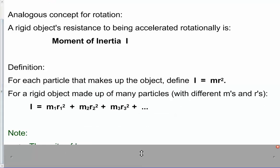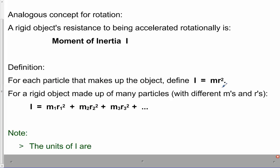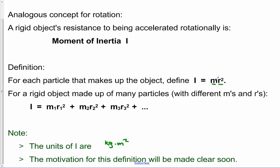Two things about this: the units are kilograms times meters squared. As for why m times r squared — why is r being squared — this ends up being the right definition to make some future formulas just work. It makes some future concepts just work, and it's all justified mathematically. It just turns out that this is the right combination of quantities.